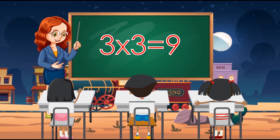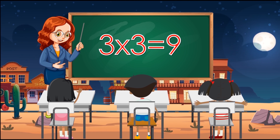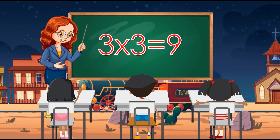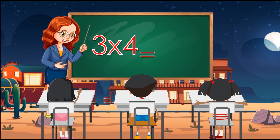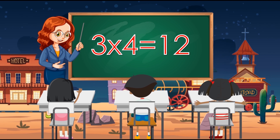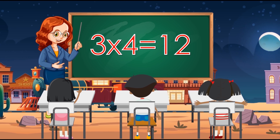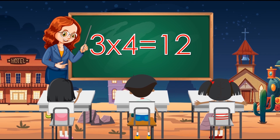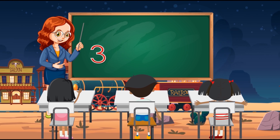Three times three equals nine. Three times four equals twelve.